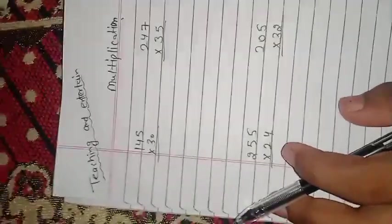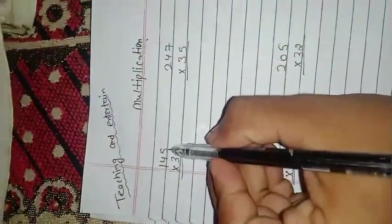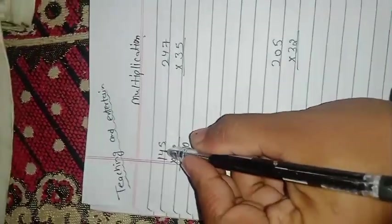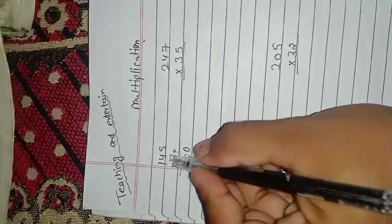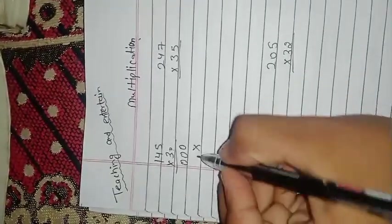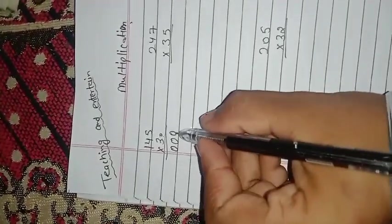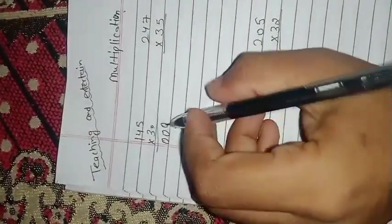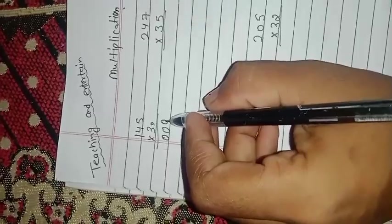145 multiply by 30. 5 times 0 is 0, 4 times 0 is 0, 1 times 0 is 0. Children, if you multiply any number by 0, your answer is 0. The number could be 100, 99, or anything. If you multiply it by 0, your answer is 0.